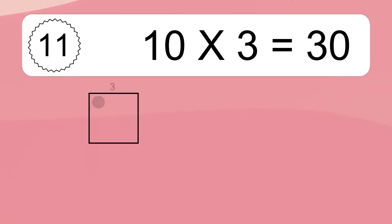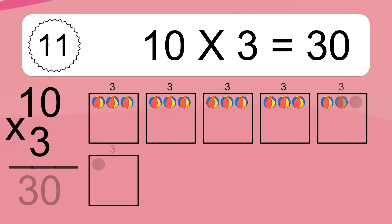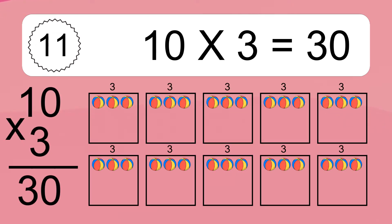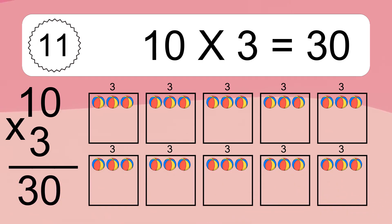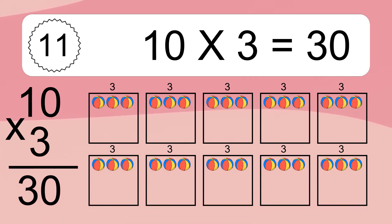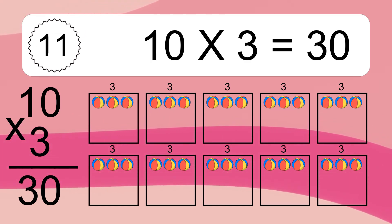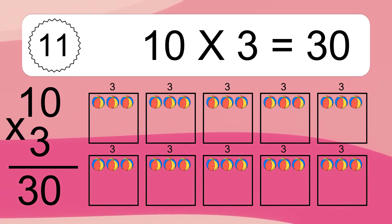10 times 3 equals what? 10 times 3 equals 30. We have 10 boxes and each box has 3 colorful balls inside. If you count all the balls in all the boxes together, you will have 10 times 3 balls. This equals 30 balls.